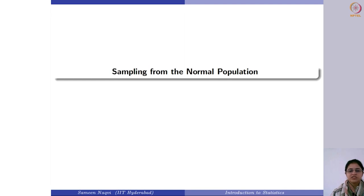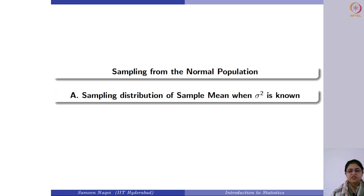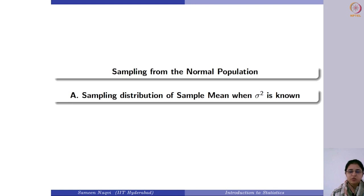Now we are going to focus on the sampling distribution of the sample mean in different situations when we are drawing the sample from the normal population. The first scenario is when the population variance is known to us. Normal distribution has two parameters: the mean mu and the variance sigma square. Since we are finding the sampling distribution of the sample mean, our focus is on the population mean. The population variance could be known or unknown, and the corresponding sampling distribution varies in these two situations.